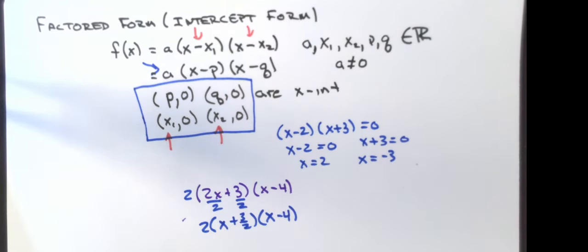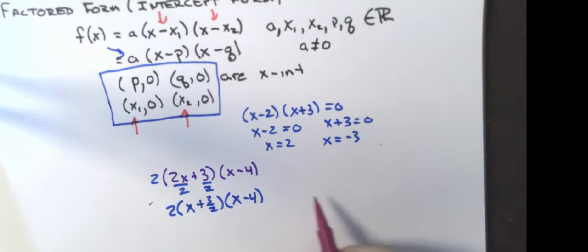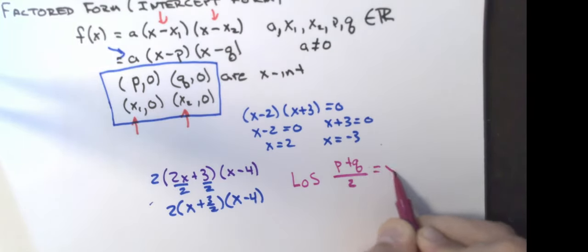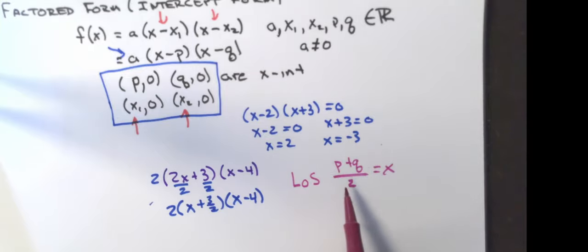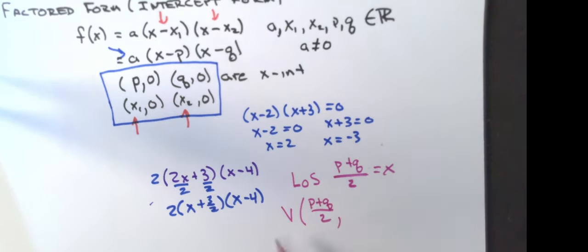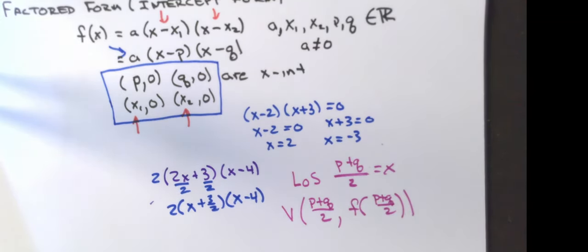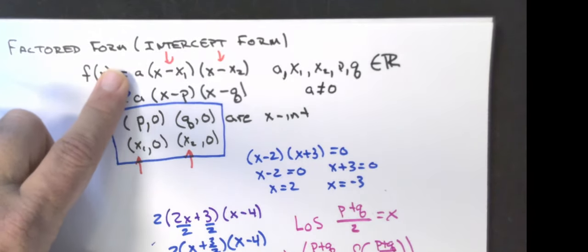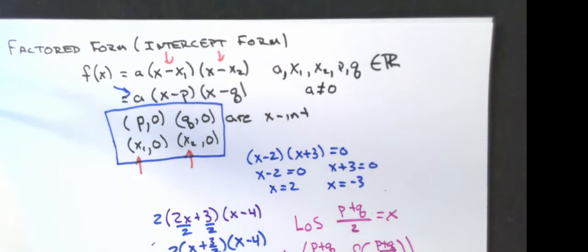From factored form, I get my x-intercepts right away — just set each factor equal to zero; each intercept is the opposite of the number in that factor. The line of symmetry is found by adding the two x-intercepts and dividing by 2 — it's the midpoint between them. So the vertex x-coordinate is (p + q) / 2. Then substitute that back into the original function to get the vertex y-coordinate. From there, use a to go over 1 up or down a, and over 2 up or down 4a.